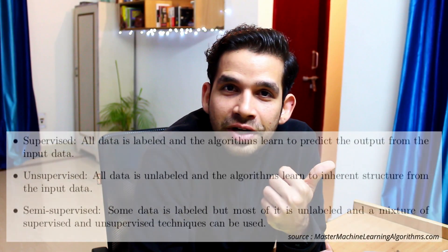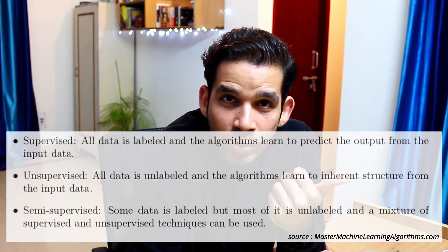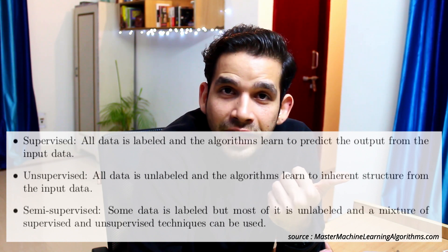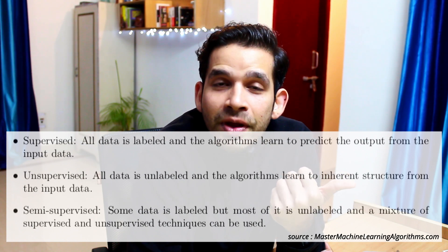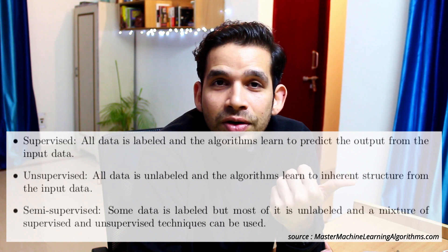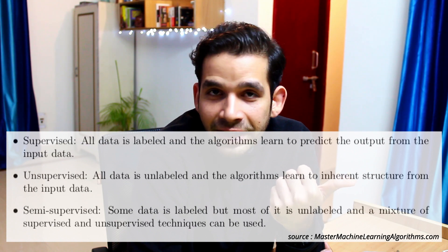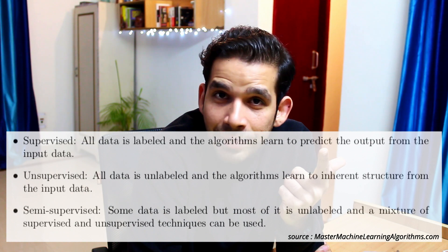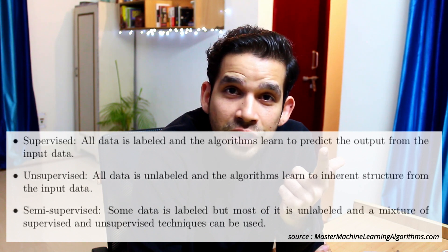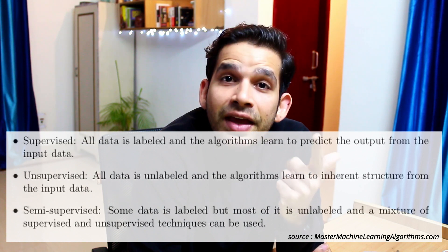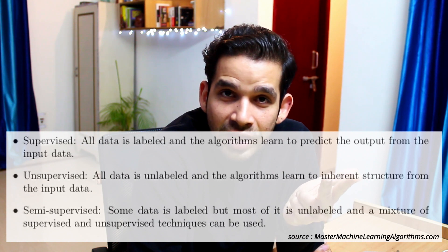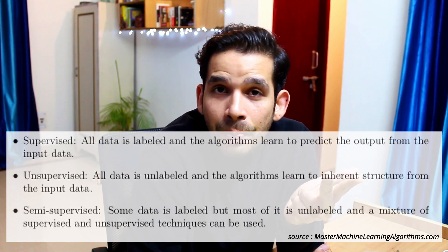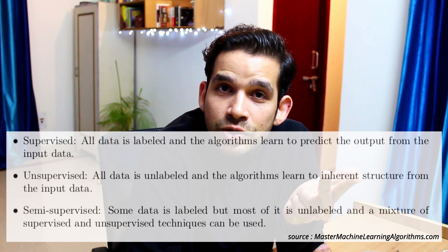In fact, the majority of machine learning problems you face today would be semi-supervised. Let's do a recap: supervised machine learning has X input data and Y output data, and the algorithm trains a function on X to predict Y. Unsupervised machine learning has no labeled data and the algorithm identifies patterns on its own. Semi-supervised machine learning has partially labeled data and uses a combination of supervised and unsupervised approaches.